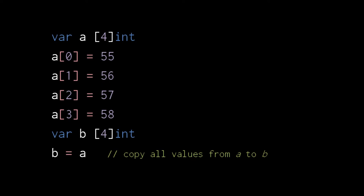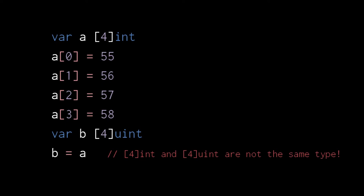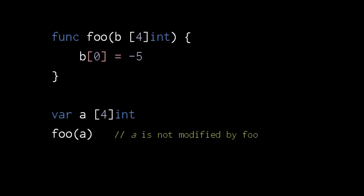Here we create another variable which is an array of four ints. Assigning array a to array b copies all of the values of a to b. Understand that the variables here are themselves arrays — they store the values directly. This is different from JavaScript where every variable is merely a reference to some object elsewhere in memory. In JavaScript, assigning a to b would make a and b both reference the same array object, but here in Go, a and b are always two separate arrays with separate values. To assign one array to the other, they must of course be the same type. The size of an array is an integral part of its type, so an array of three ints is not the same type as an array of four ints.